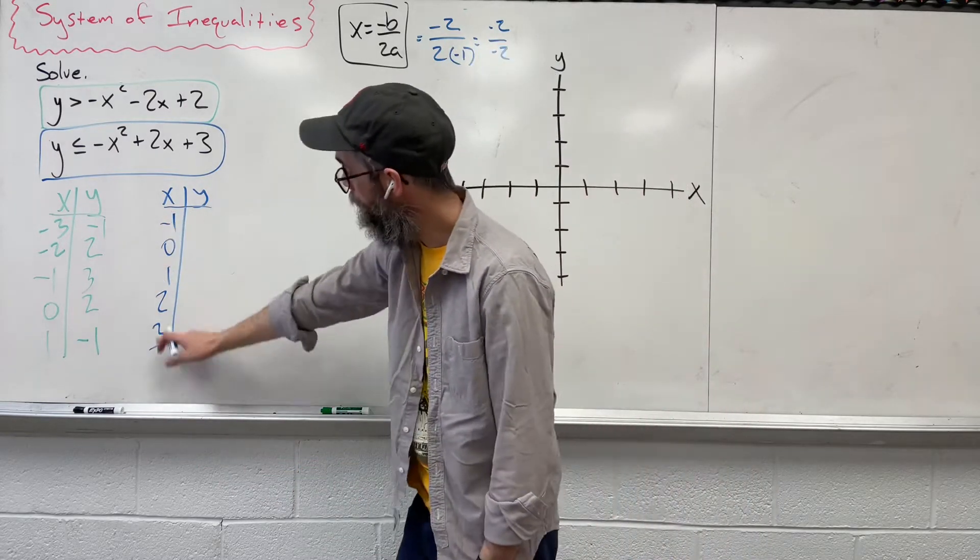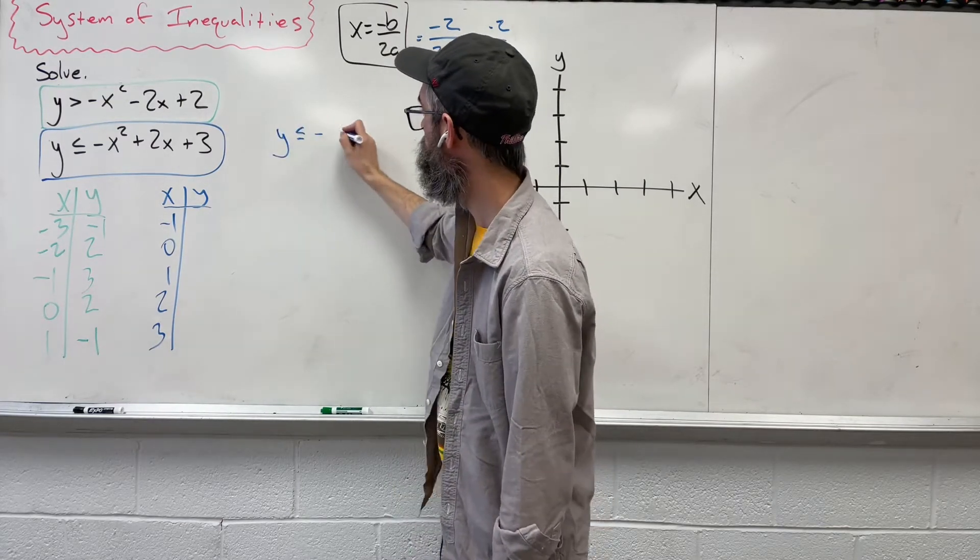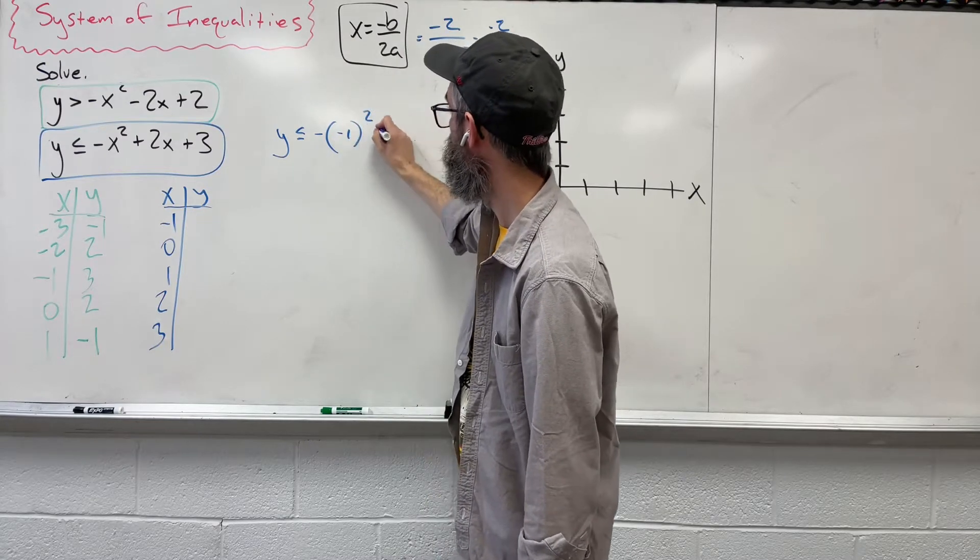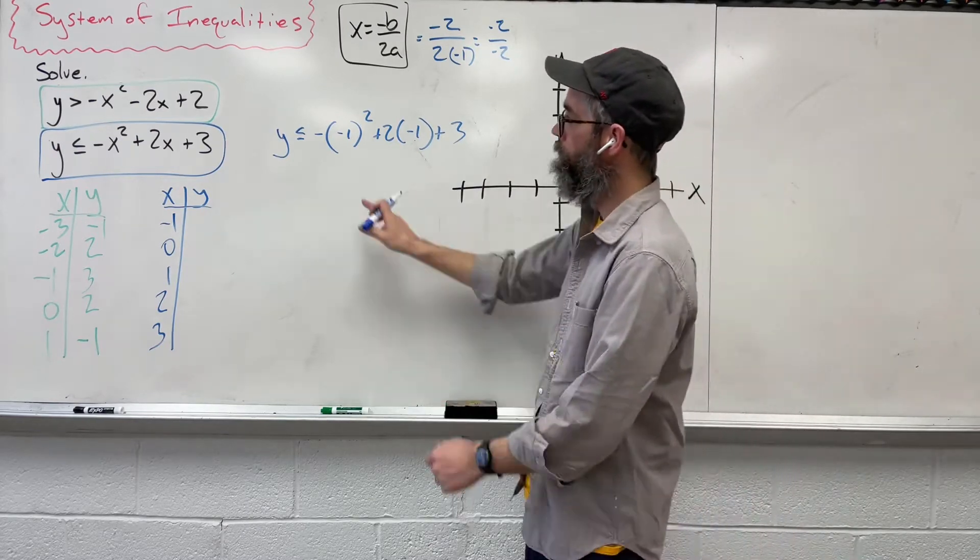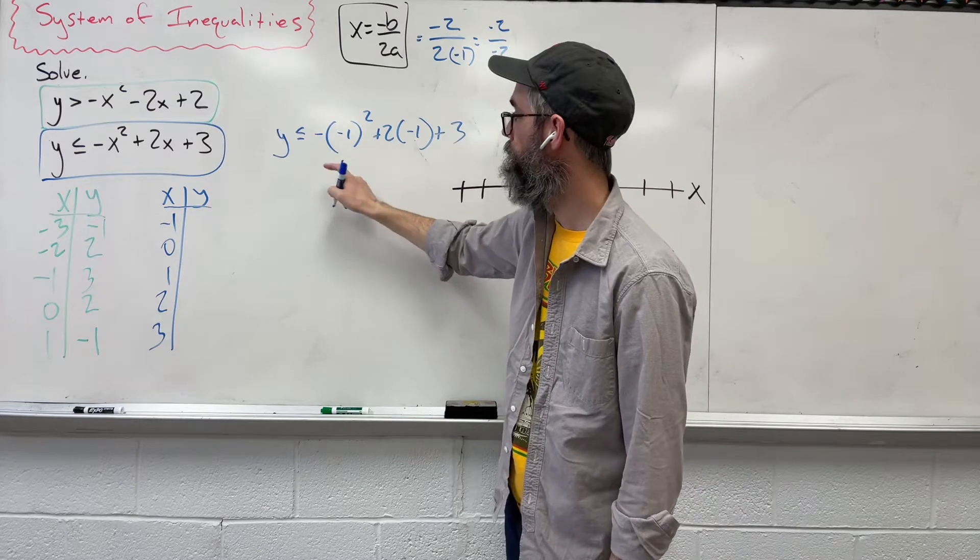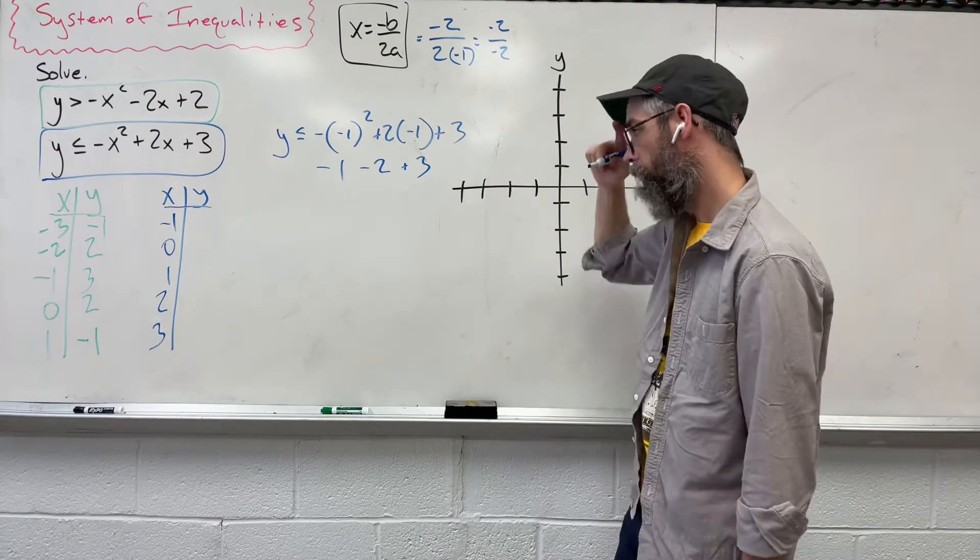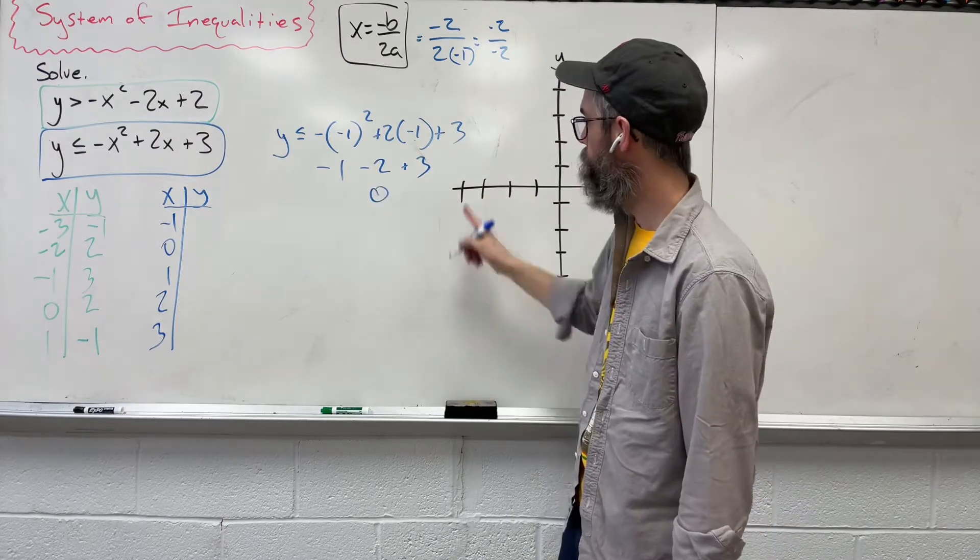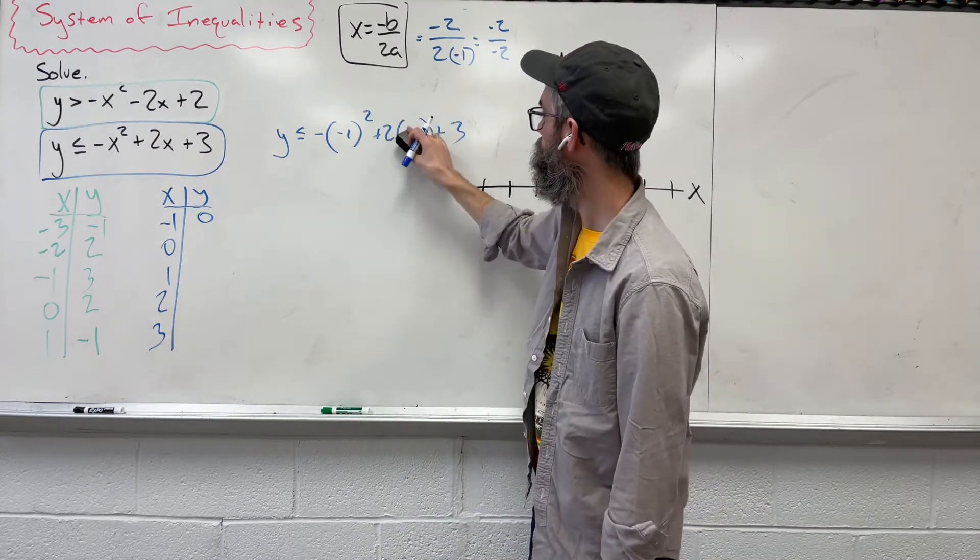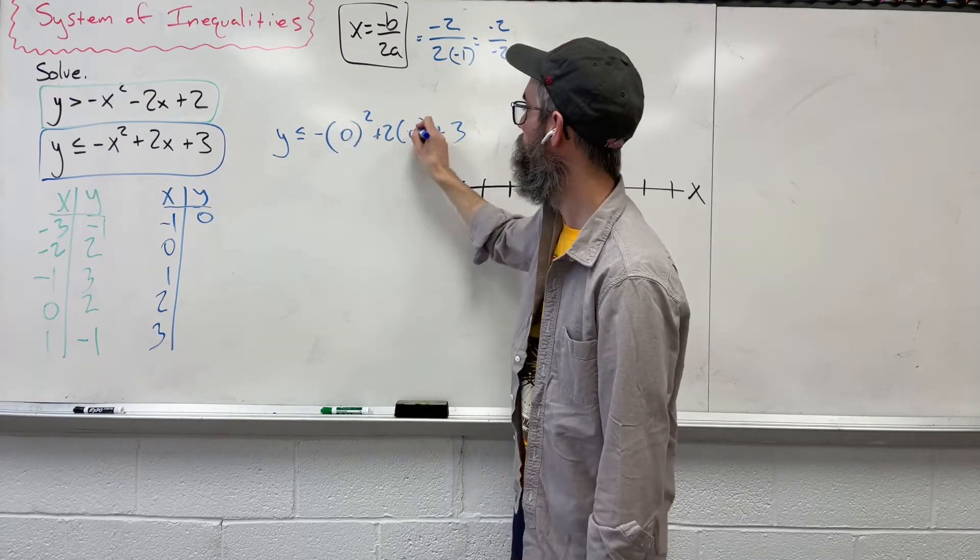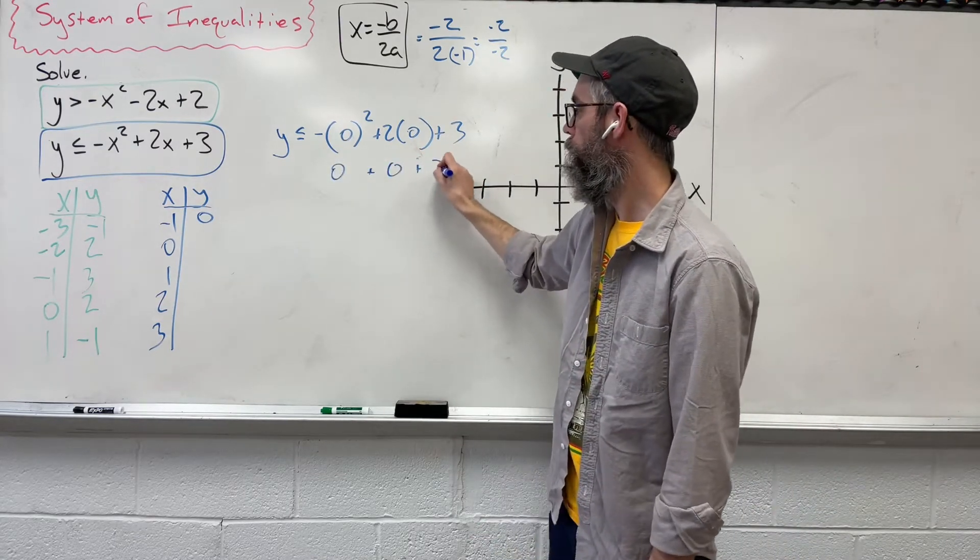I want to take these five numbers now and plug them into this. So y less than or equal to negative 1 squared plus 2 times negative 1 plus 3. Okay, order of operations. Negative 1 times negative 1 is positive, but we have a negative. Bring it down. Negative 1, 2 and negative 1 is negative 2, and 3, which is going to give us 0. What number did we plug in? Negative 1, so we get the 0 there. Good. Let's do it again, but this time with 0, one of the best numbers we can plug in because everything just cancels out and you're left with that 3.